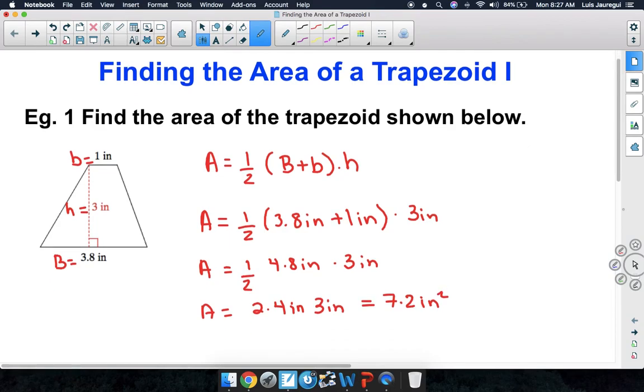Therefore, we can conclude that the area of the trapezoid is 7.2 square inches, or inches squared.